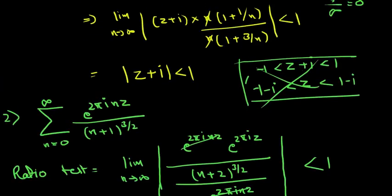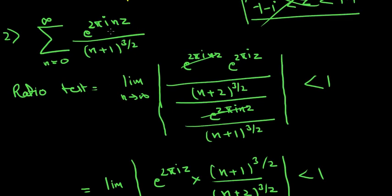Now for the other question, we do the same thing. When we put n+1, we get two terms. Changing n to n+1 gives e^(2πiz(n+1)), which becomes e^(2πizn) × e^(2πiz). According to exponential rules, we can break it like this. This will cancel with the denominator term.